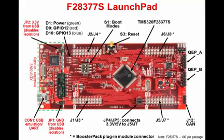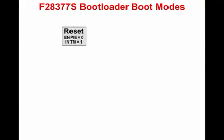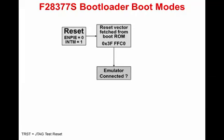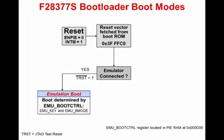The boot modes are set by switch S1. When the device is reset, the peripheral interrupt expansion block, also known as the PIE block, and the master interrupt switch INTM are disabled. This prevents any interrupts during the boot process. The program counter is set to 3F FFC0 where the reset vector is fetched. In the boot code, the JTAG test reset line or TRST line is checked to determine if the emulator is connected. If the emulator is connected, then the boot process follows the emulation boot mode flow.